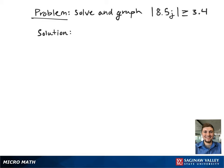Here we have the absolute value inequality |8.5j| ≥ 3.4. This means that 8.5j ≤ -3.4 or 8.5j ≥ 3.4.